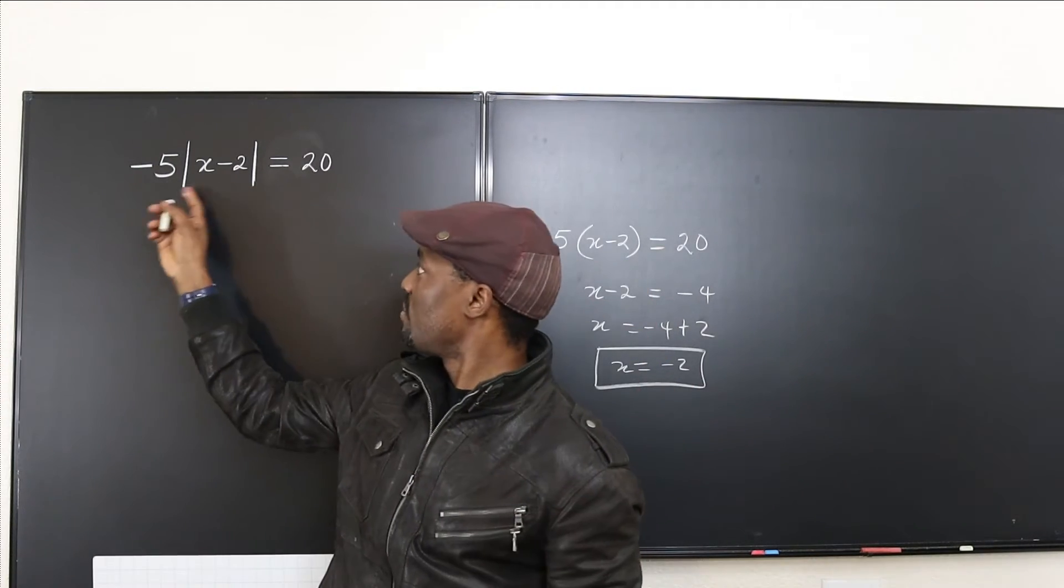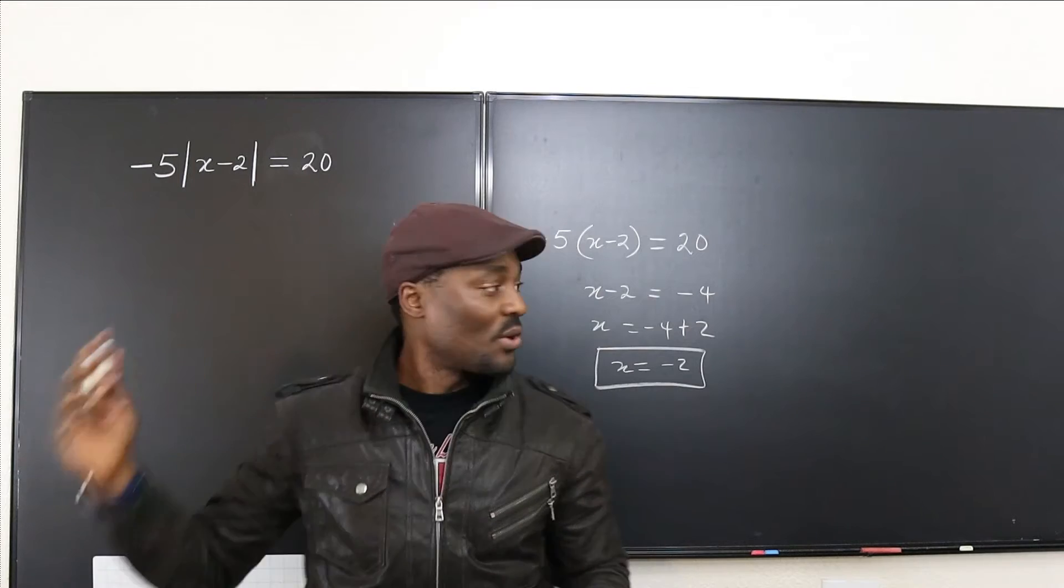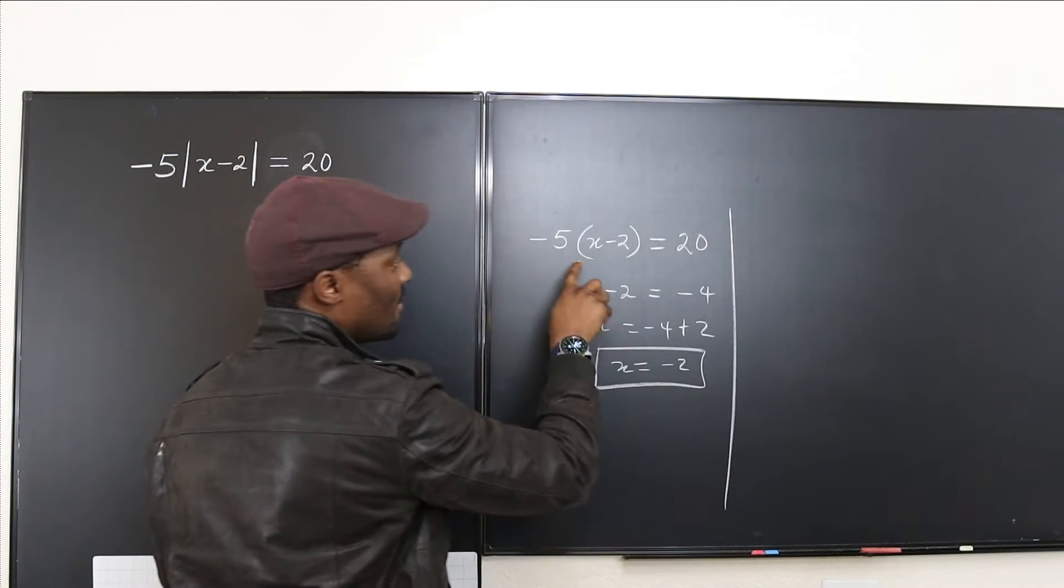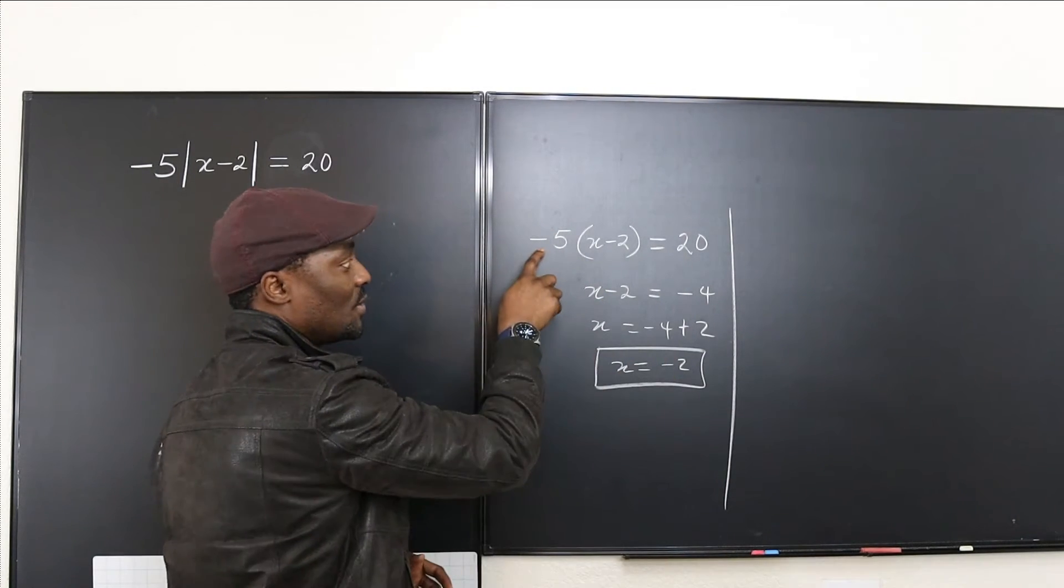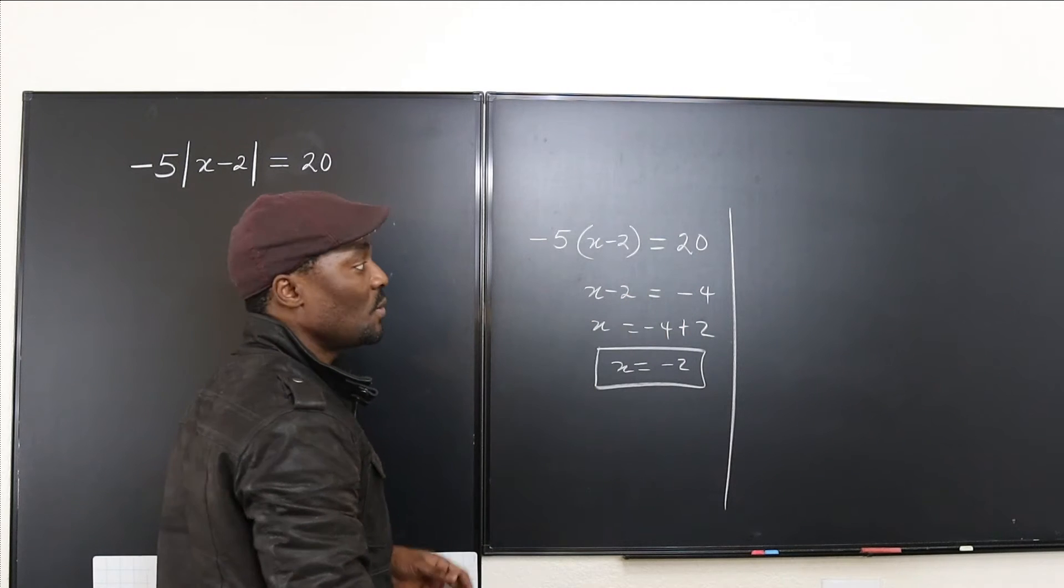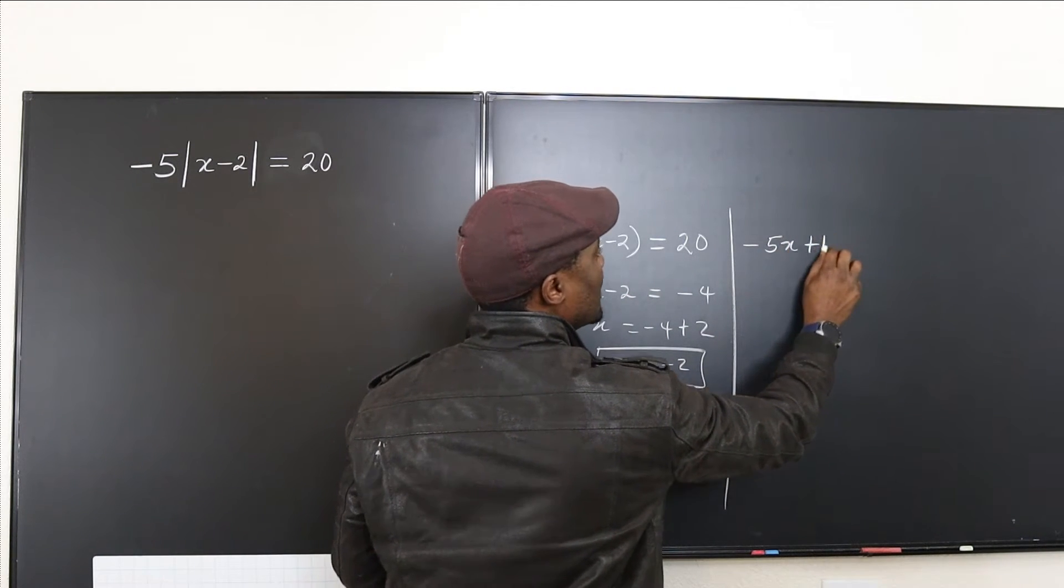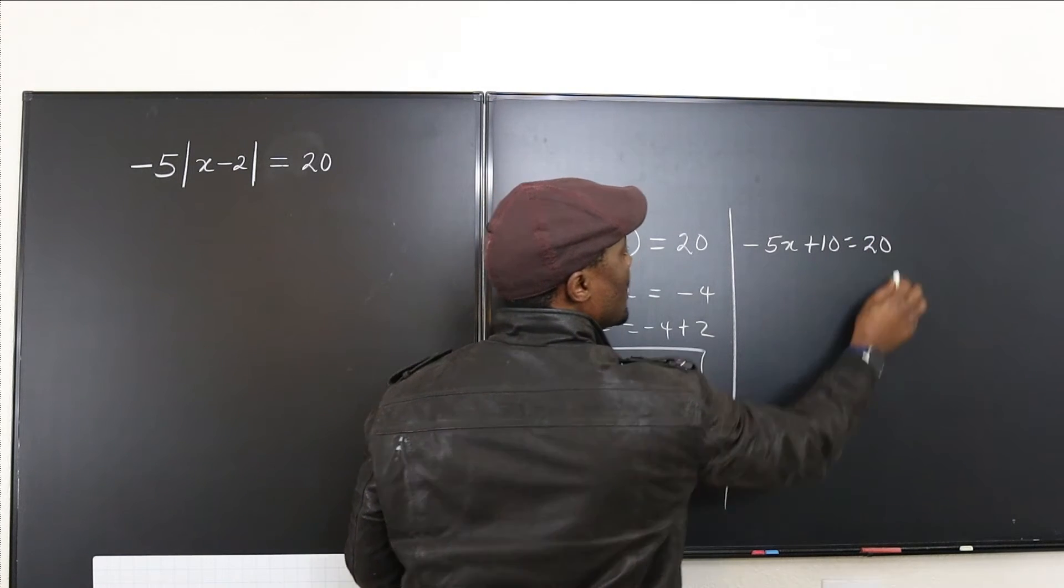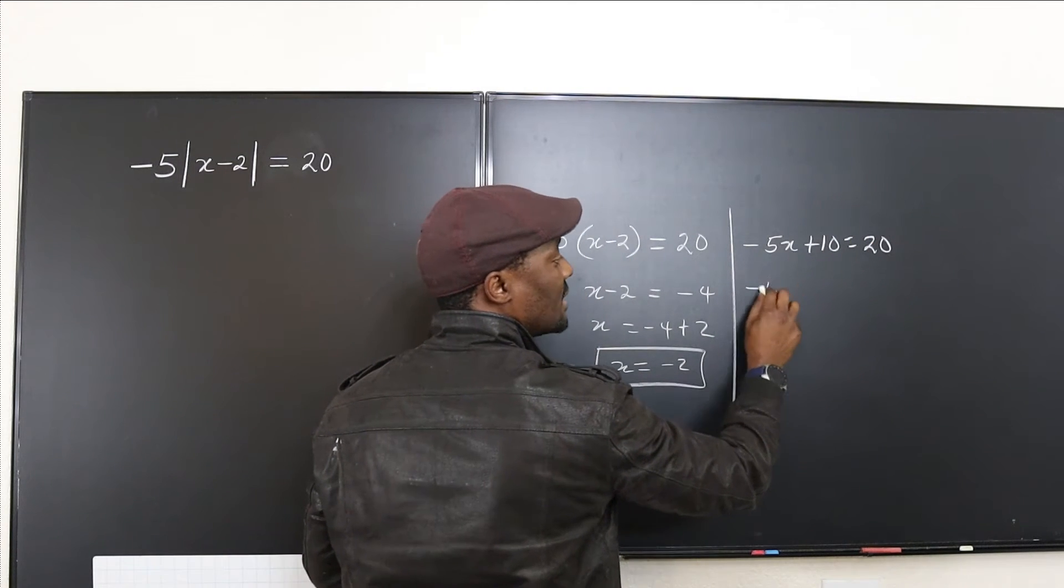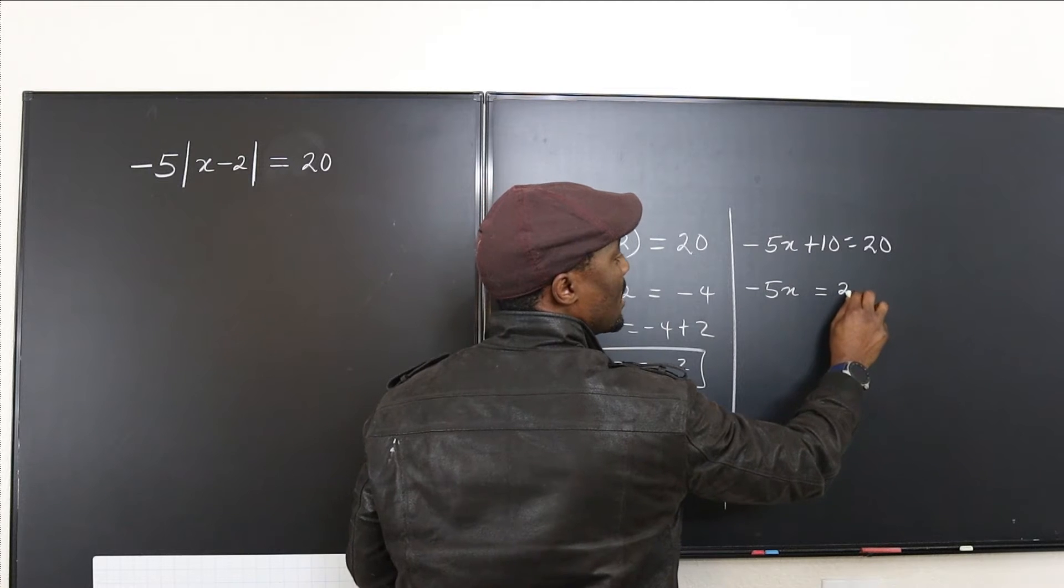Another way you could do this instead of dividing both sides by negative 5 is to distribute the negative 5 through. So you're going to have negative 5x plus 10 equals 20. Then you can subtract 10 from both sides: negative 5x equals 10.